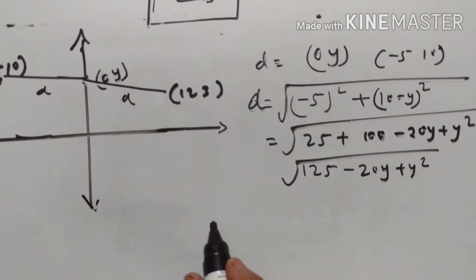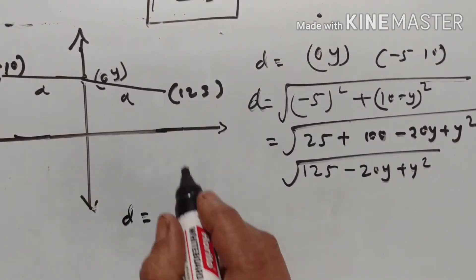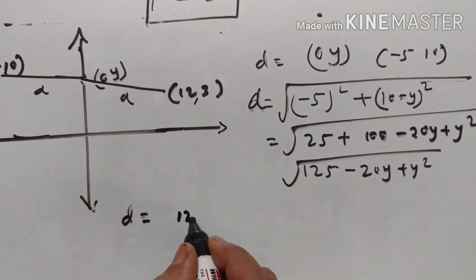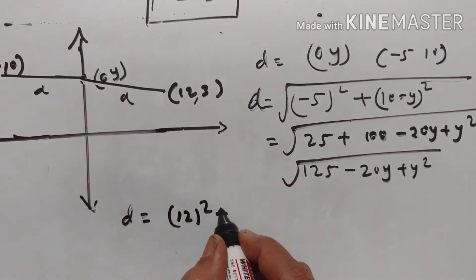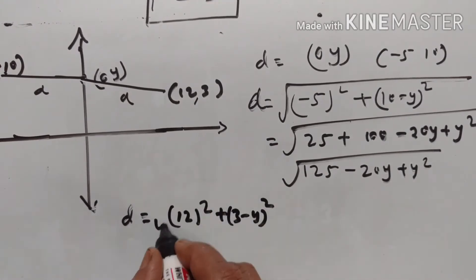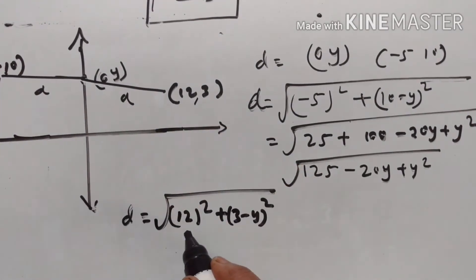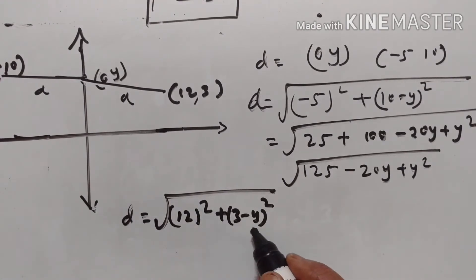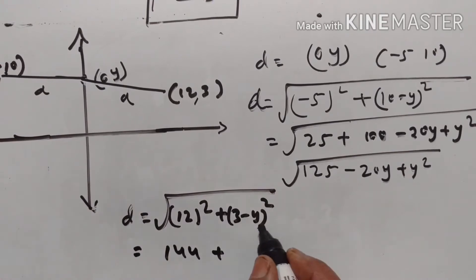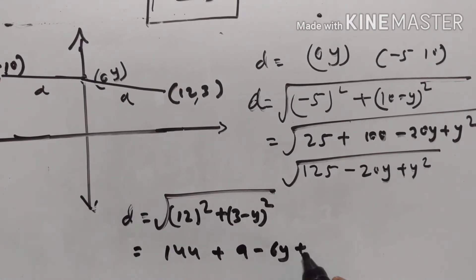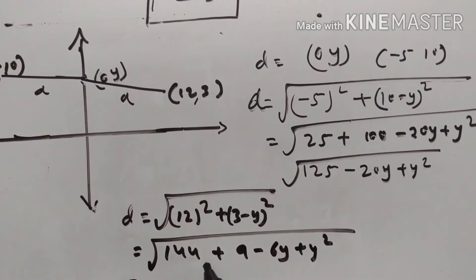The second distance between (0, y) and (12, 3): (12 - 0)² + (3 - y)². Here x₂ - x₁ = 12 and y₂ - y₁ = 3 - y. Expanding: 144 + (3 - y)² = 144 + 9 - 6y + y² = 153 - 6y + y².